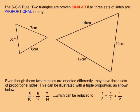The SSS rule states that two triangles are proven similar if all three sets of sides are proportional in length. Even though these two triangles are oriented differently, they have three sets of proportional sides.